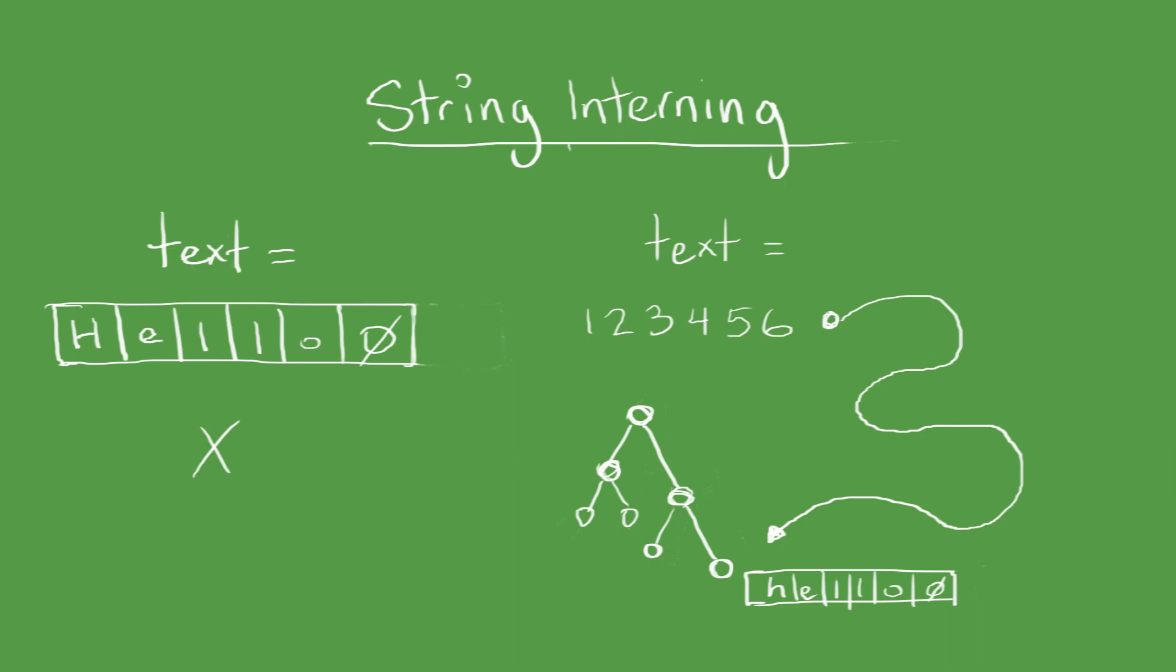Anytime we create a new string, we first check if that string is in the data structure already. If it isn't, we put it there and keep its address. If it is, we just maintain a pointer to that same string.